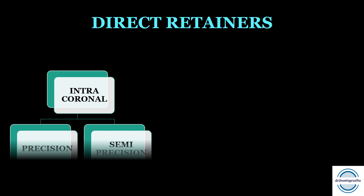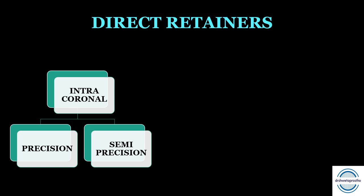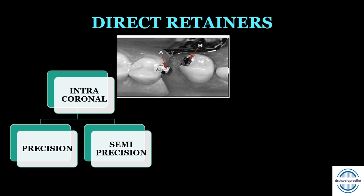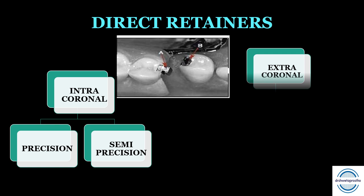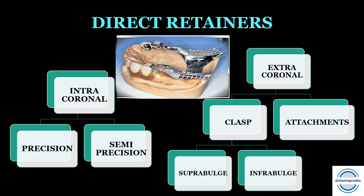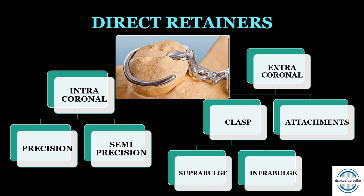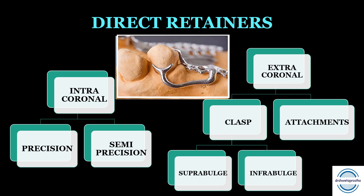Direct retainers can be of two types: intracoronal and extracoronal. Intracoronal direct retainers are placed within the contour of the crown; they can be precision (prefabricated) or semi-precision (available in wax or acrylic, casted and placed in the tooth). Extracoronal retainers can be clasp assemblies or attachments. Clasp assemblies can be supra-bulge or infra-bulge depending on origin. Occlusally approaching (supra-bulge) clasps are circumferential clasp assemblies; cervically approaching (infra-bulge) clasps are bar clasp assemblies.